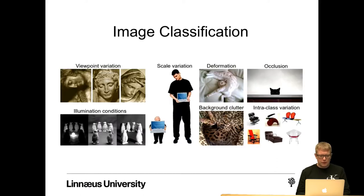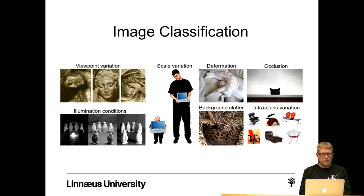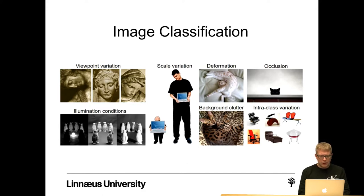This is illustrated here. The viewpoint variation: the statue to the upper left, we look at it from different angles. The illumination conditions: we have very different lighting conditions on the same objects. Scale variation: these two humans vary in scale. Deformation: this cat has a very weird position. The background clutter: an object is cluttered into a background. Occlusion: we only see a small part of this black cat. And intraclass variation: we have six variants of chairs and they all look very different.